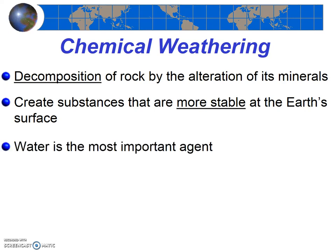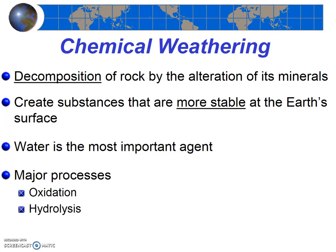There are three important chemical weathering processes, and in all three, water often — but not always — plays an important role. We're going to go through each of these major processes, giving examples and noting under which conditions or for which rocks these processes are important.